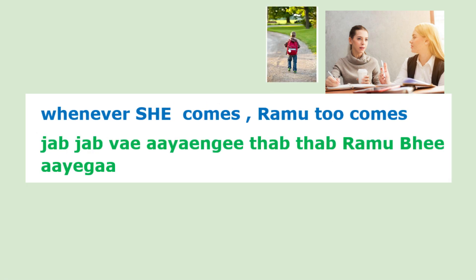Whenever she comes, Ramu comes: jab jab ve aayengi, tab tab Ramu ve aayega. Here you can see the jab jab - tab tab combination. If she comes on Monday, Ramu will also come on Monday. If she again comes on Wednesday, Ramu will also be there. Jab jab — tab tab.